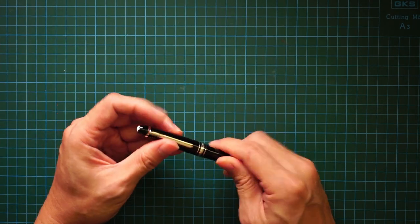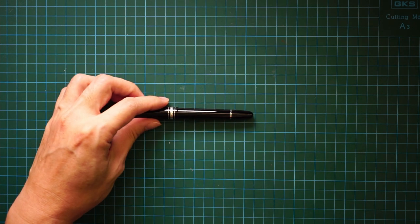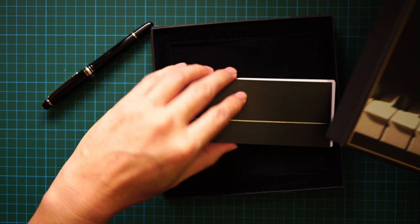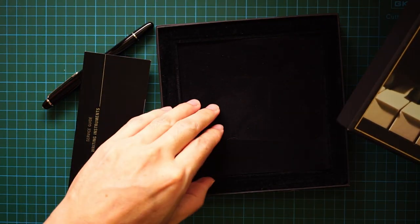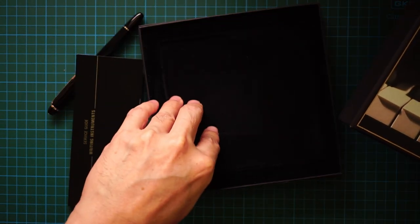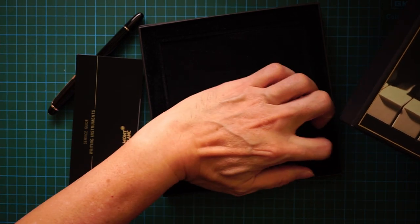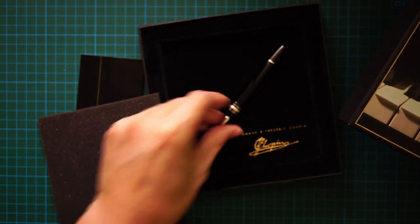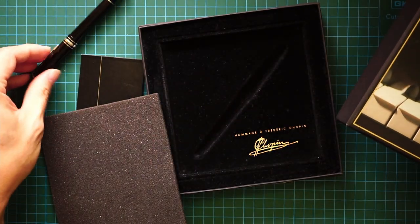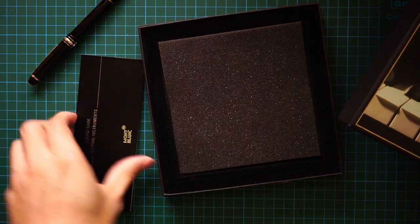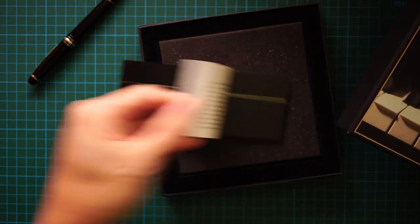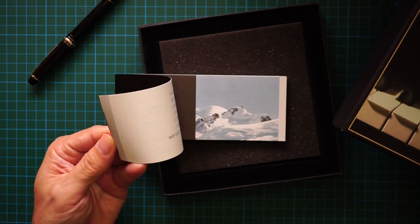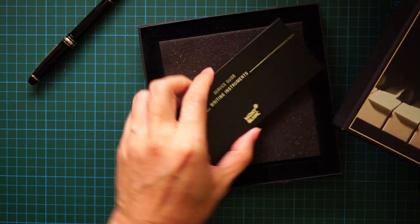So before I write with it, this being the Chopin version which I got, it came in a box like this, and there was actually a CD that was supposed to be included, but I lost it. There's a nice guide down here that shows how to use the pen as well as some literature about the world of Mont Blanc.